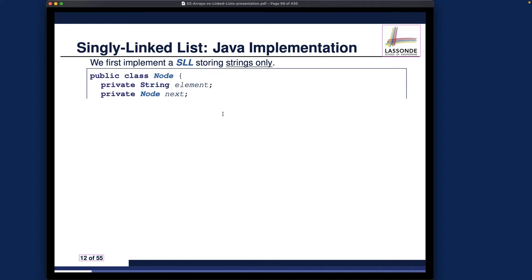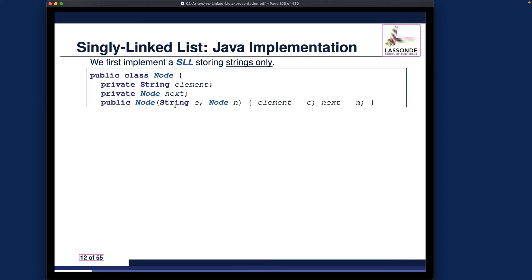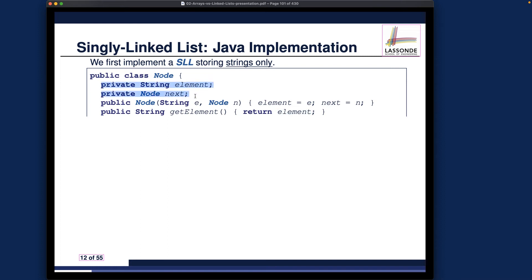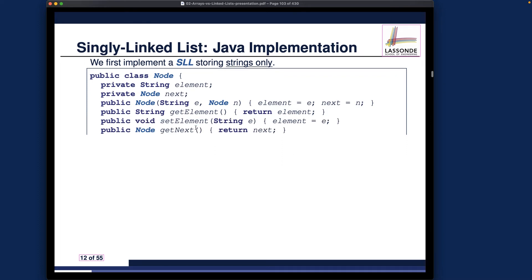The methods for the Node class are straightforward — they are the accessors and mutators for the two attributes. The constructor takes two arguments: the string element value (for example, a name) and the reference to the next node, which may or may not be known. We also have getElement() as the accessor, following the principle that all attributes should be private with public accessors and mutators.